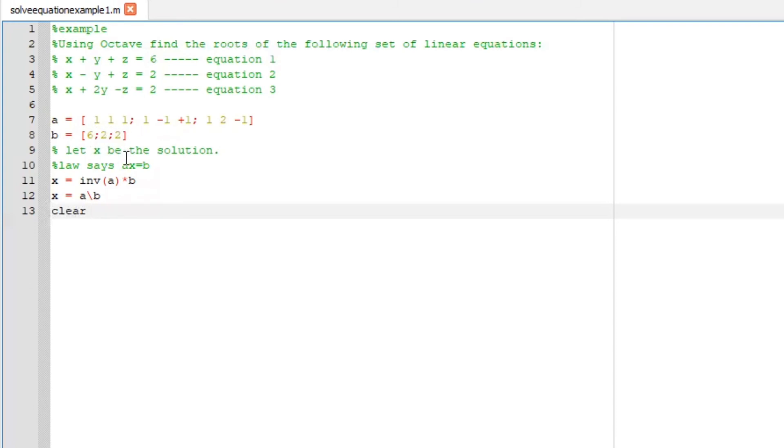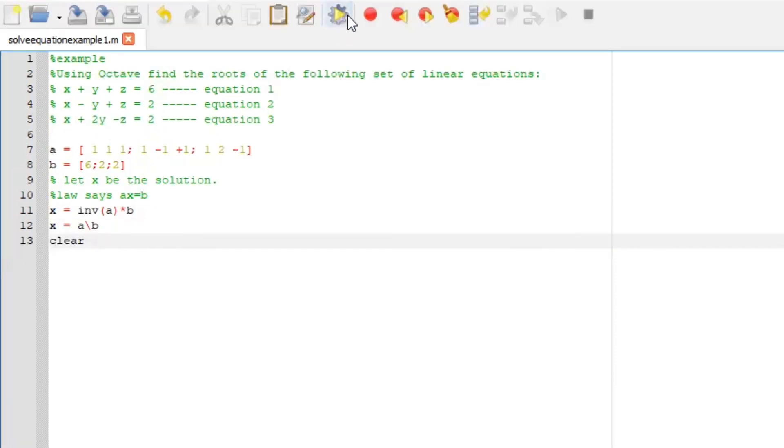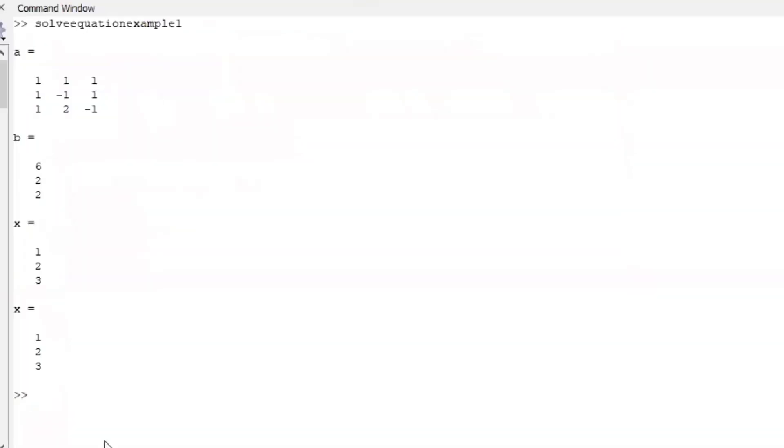Let the solution be equals to X. Using Octave to solve this, you can say X equals inv A multiplied by B, the inverse of A, or you can use this backward slash to represent inverse. If you run this file on editor section, everything will be solved on your command window.